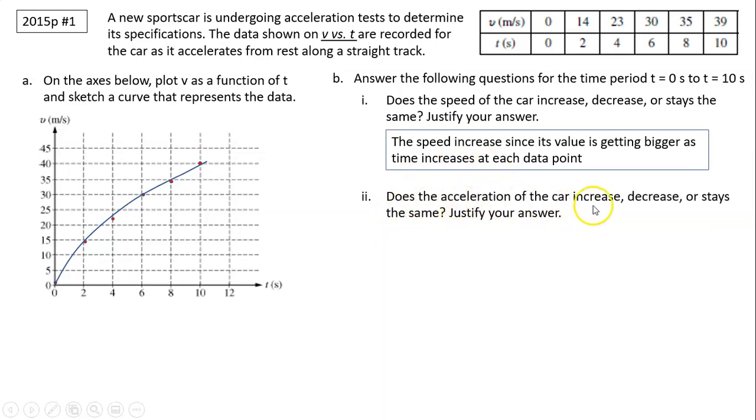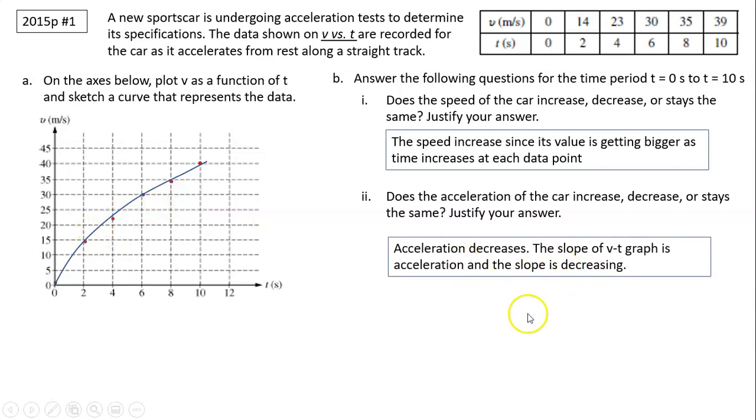Part ii: Does the acceleration of the car increase, decrease, or stay the same? Justify your answer. Acceleration is the slope. How does the slope change? As you can see the slope is decreasing. So the acceleration decreases because the slope is decreasing.